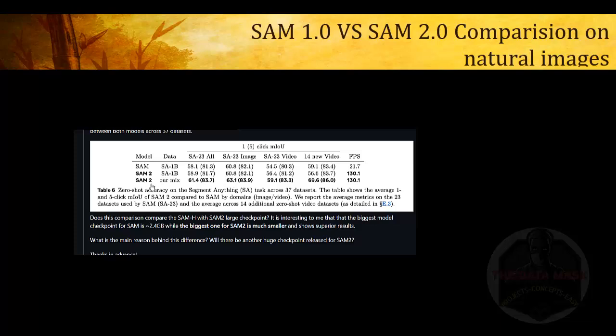Another very important change for SAM 2 is the performance. SAM 2 is very, very fast as compared to SAM. You can see the frames per second for SAM is 21 frames per second, but in SAM 2 it is 130 frames per second. This performance enhancement in SAM 2 is really making the major difference.